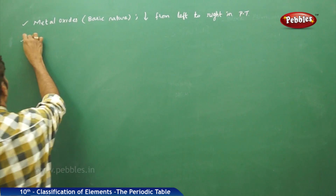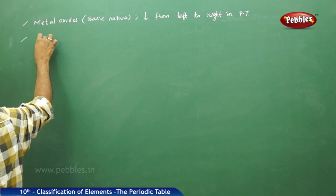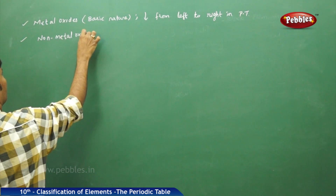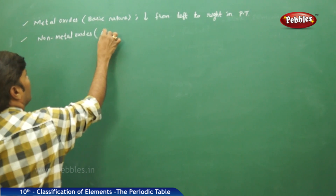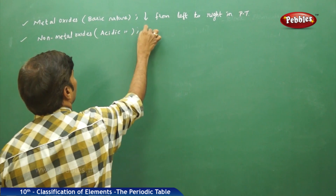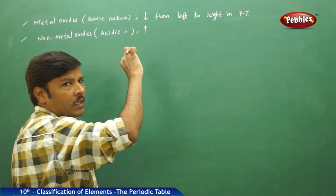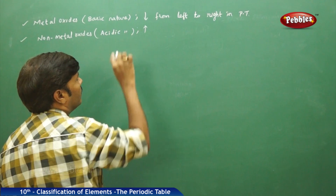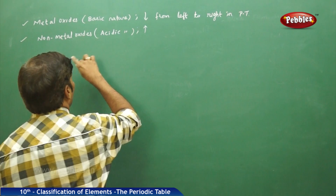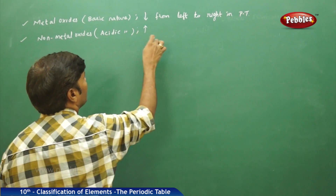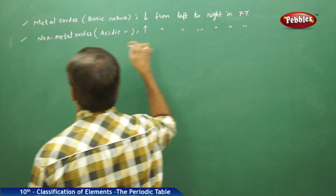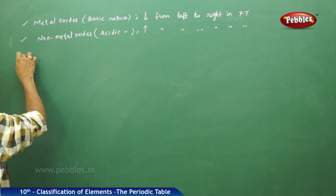Whereas, if you take non-metal oxides, the acidic nature increases from left to right in the periodic table. An upward arrow stands for increasing of the property and a downward arrow represents the decreasing of the property.